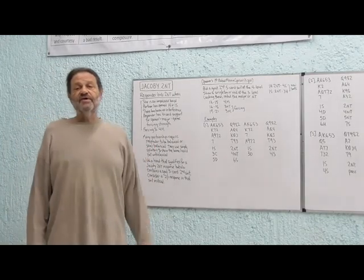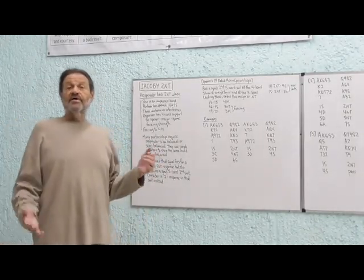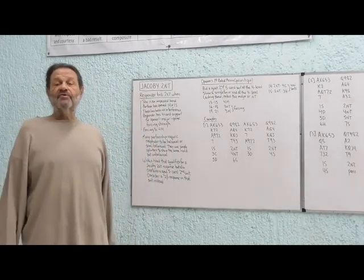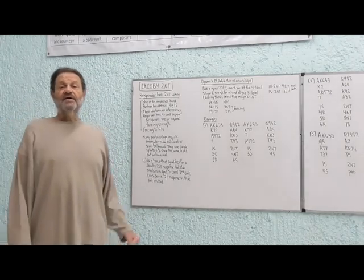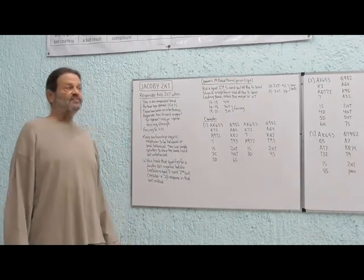So after an opening bid of one heart, a bid of three spades, four clubs, or four diamonds would be a splinter, and we show that unbalanced hand. After an opening bid of one spade, a jump to four clubs, four diamonds, or four hearts would be the splinter. But that would be a hand with a singleton or a void.